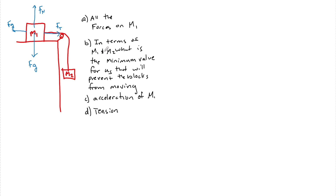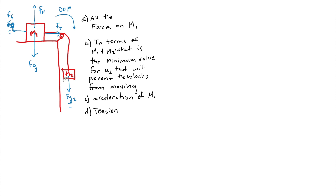Question 2 wants to know, in terms of M2 and M1, what is the minimum value for mu static that will prevent the box from moving? Essentially, when these boxes start to move — if I call the direction of motion in this fashion — for this system to accelerate, M2 has to win over FG. M2 has a force of weight FG of M2, and it has this tension. Once FG2 becomes bigger than the force of friction, it will start to move.